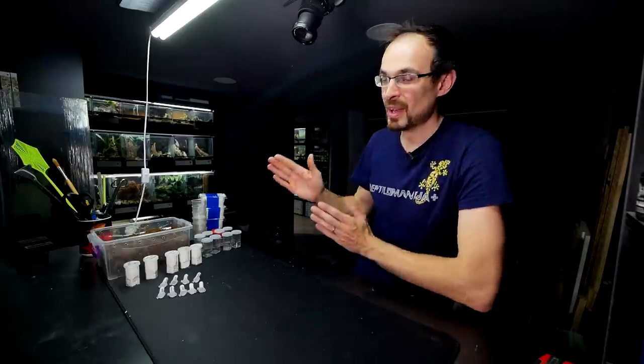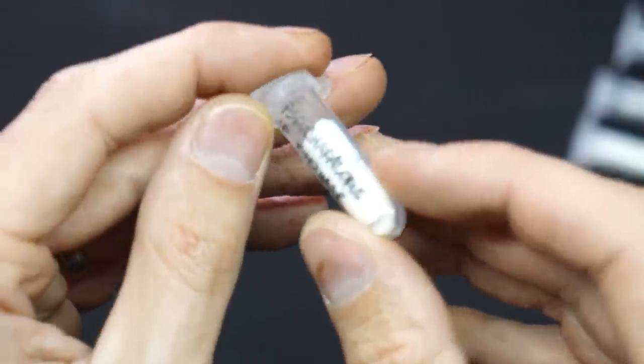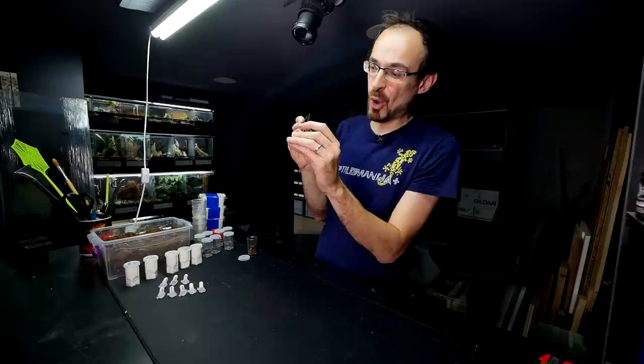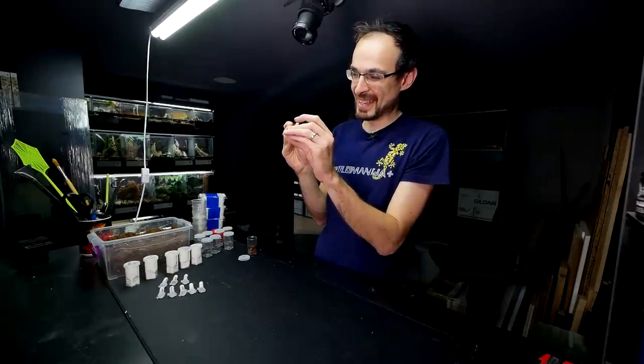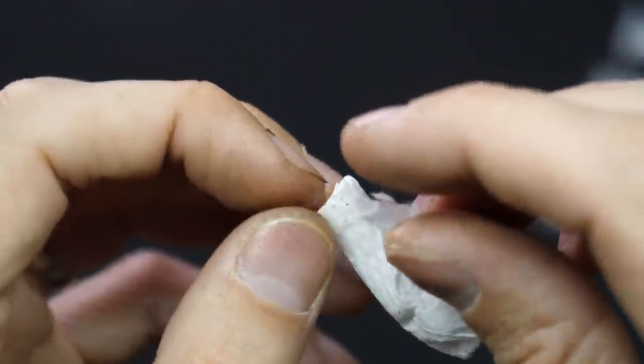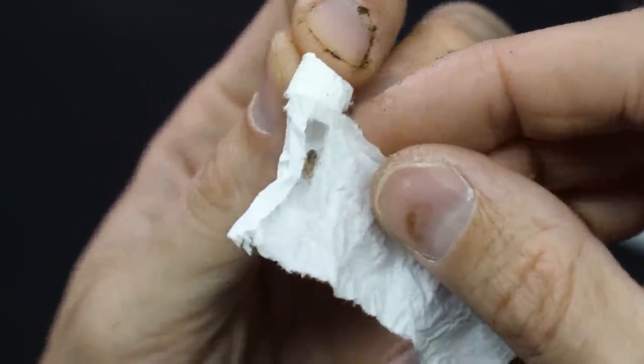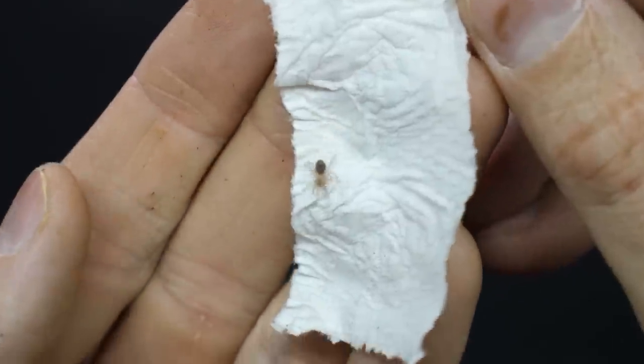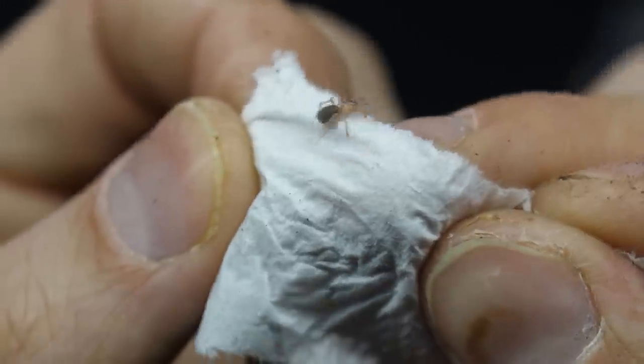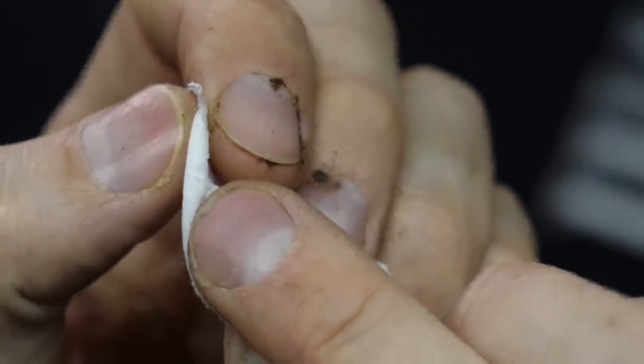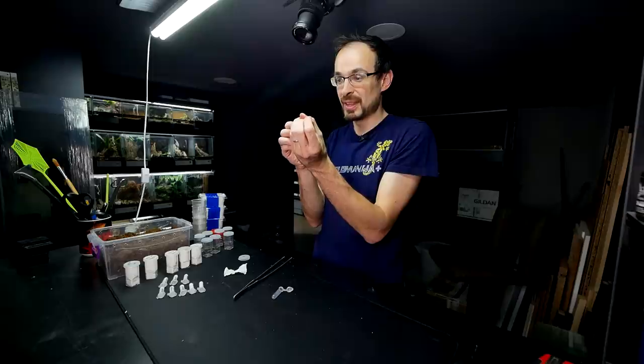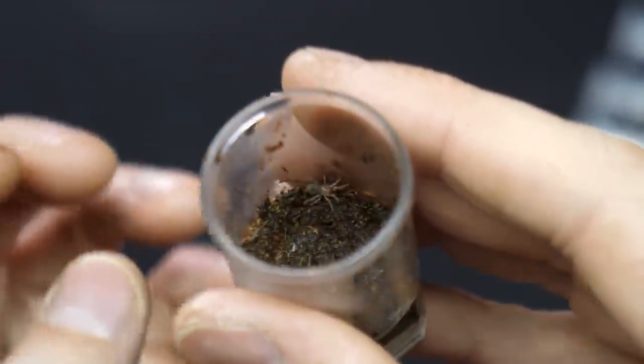Everything is prepared so let's dive in and I will actually start with this Pseudo-Hapolopus species. It should be a tiny tarantula. Let's hope that it is not super bolty because this is something that you can easily lose. Here is the little one, check how tiny it is. Currently it is not something to look at but in the future once it grows it should be really pretty tarantula.